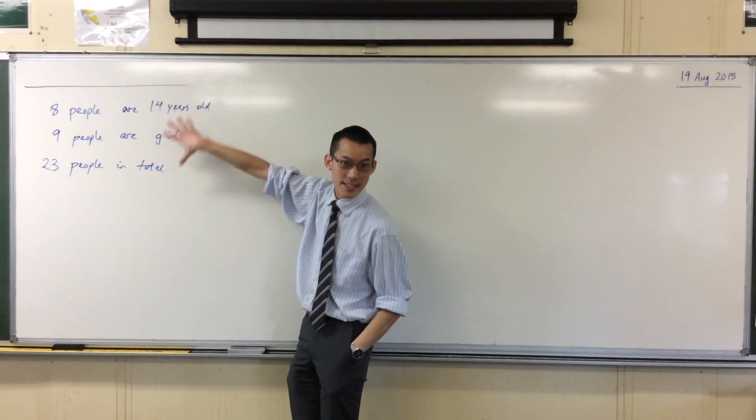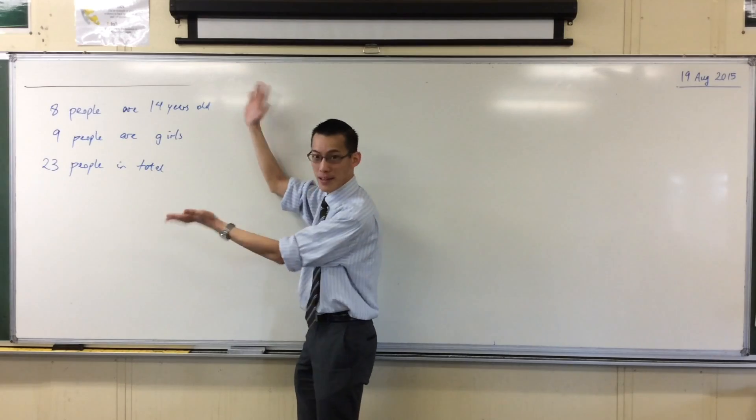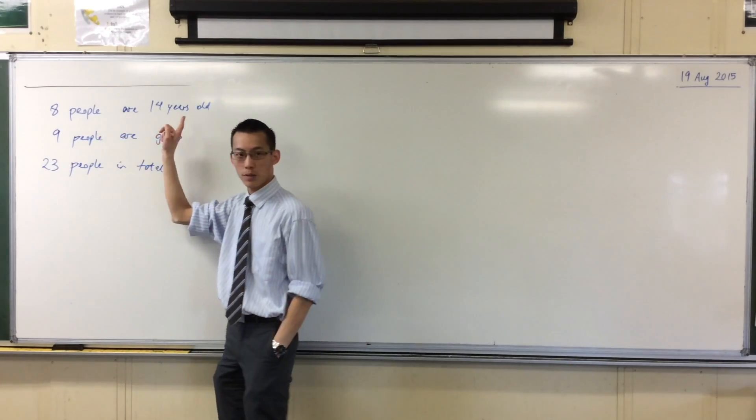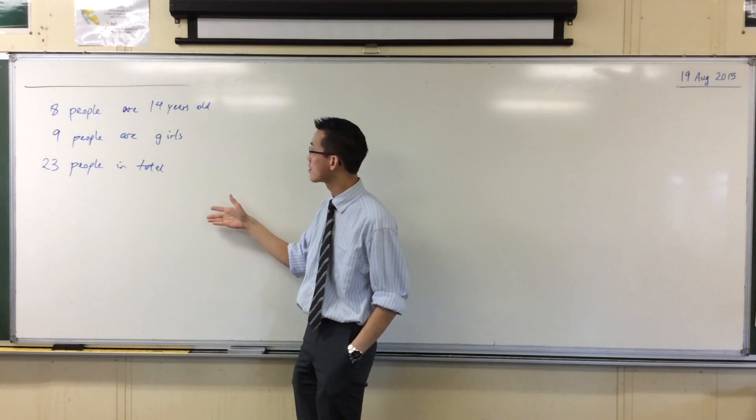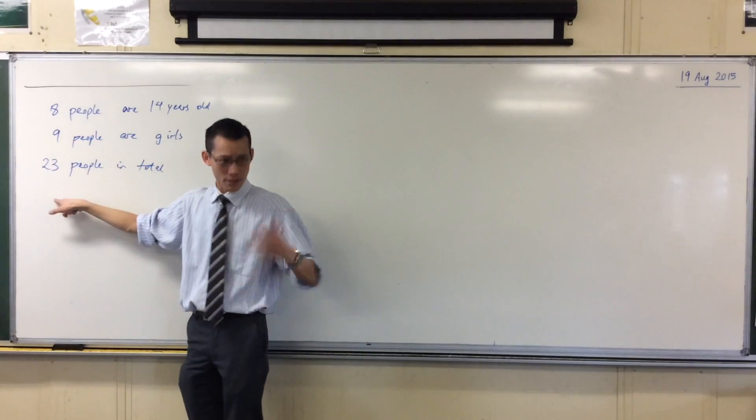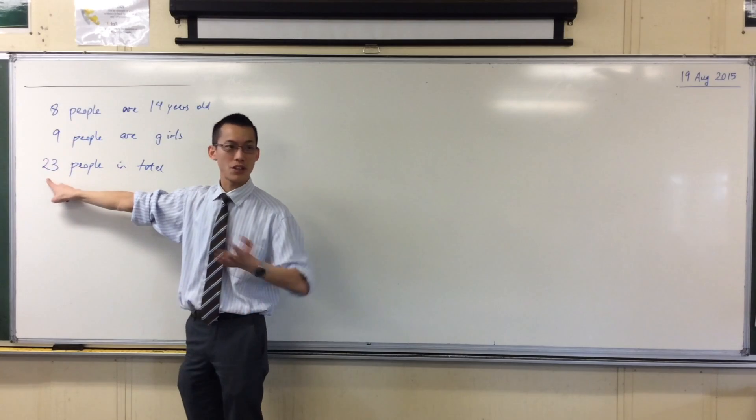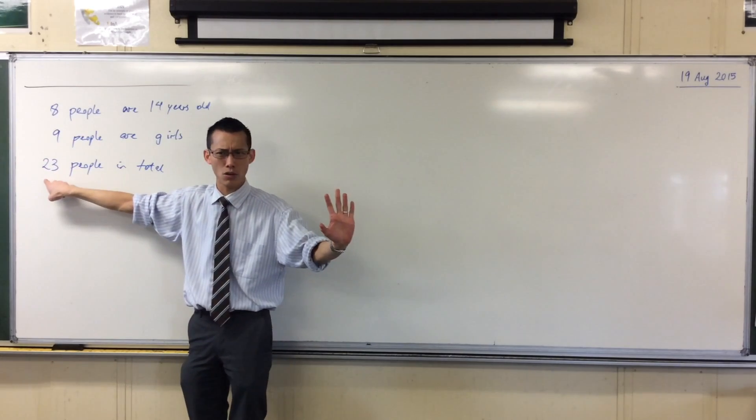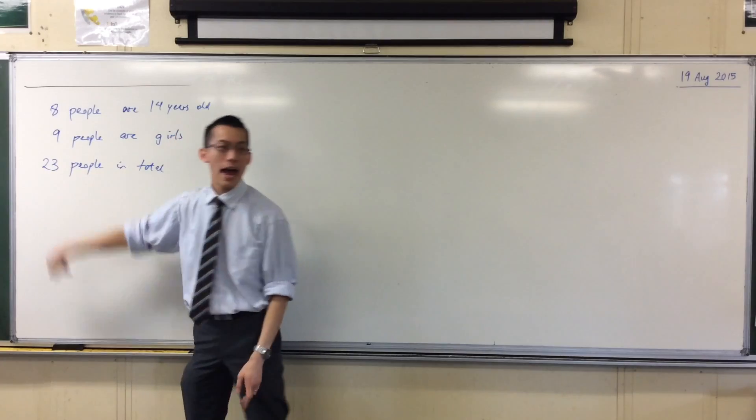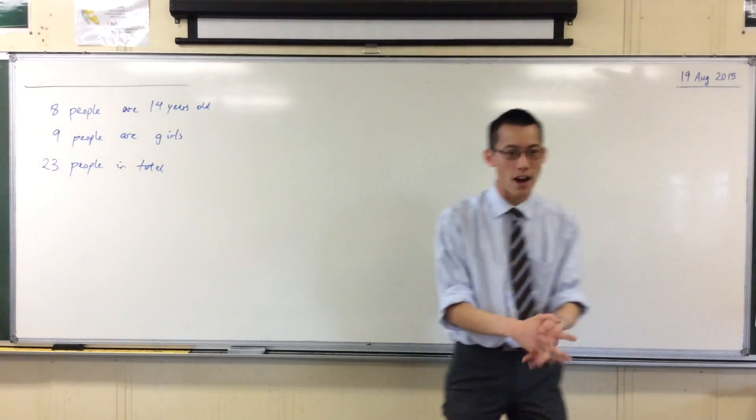For instance, what's easy to see already on the board is the probability of picking out someone who's 14 years old in the class is 8 out of 23. You see that? Favorable events, 8 divided by the total possible events. What's it called again? Sample space, very good, out of 23. So that's fair enough.